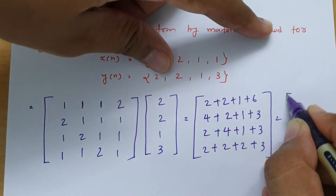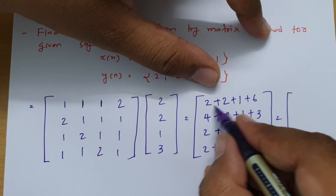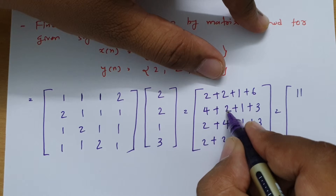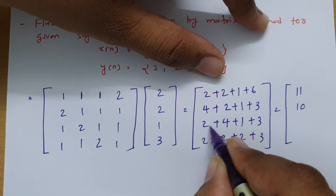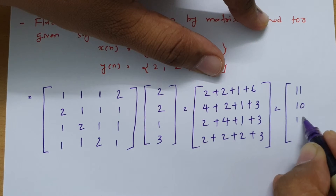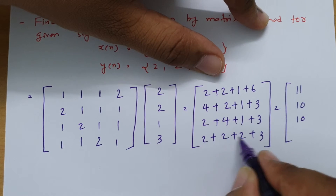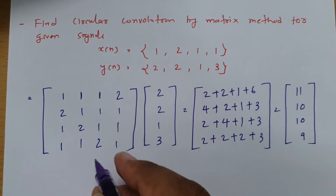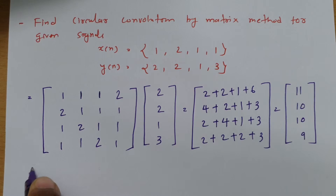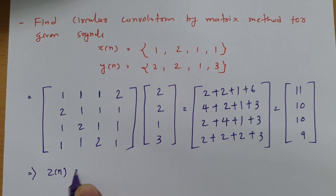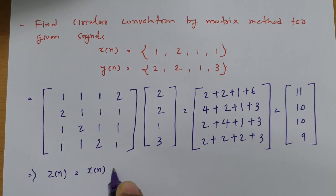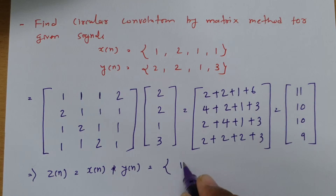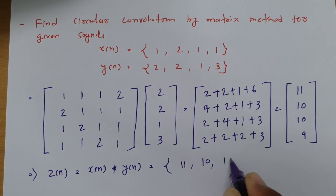Solving these sums gives the circular convolution data. First: 2 plus 2 plus 1 plus 6 equals 11. Second: 4 plus 2 plus 1 plus 3 equals 10. Third: 2 plus 4 plus 1 plus 3 equals 10. Fourth: 2 plus 2 plus 2 plus 3 equals 9. So z of n, the convolution of x of n and y of n, is 11, 10, 10, and 9.